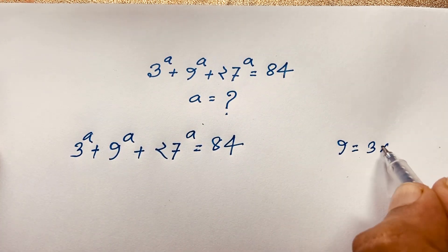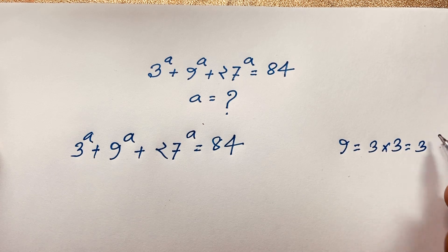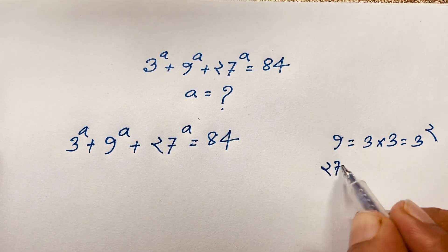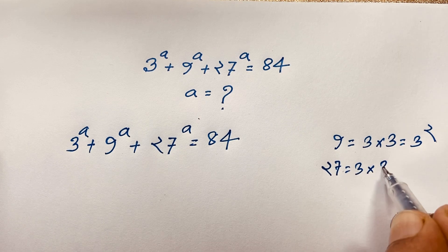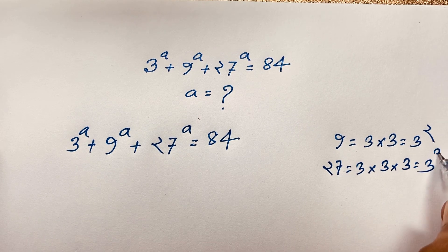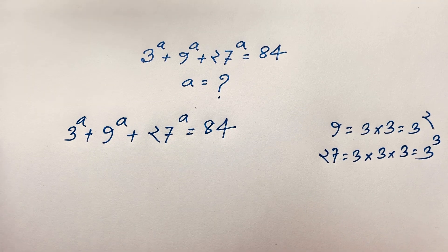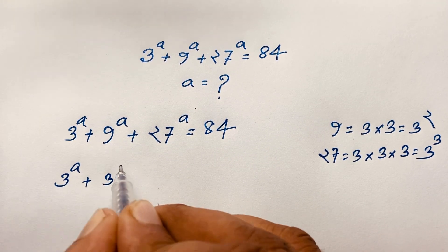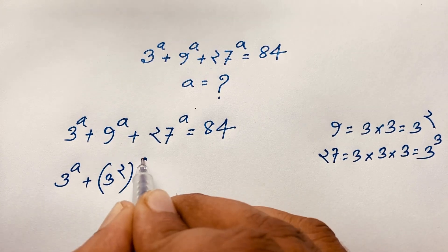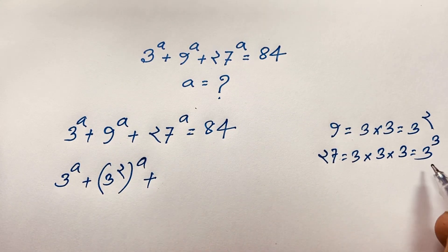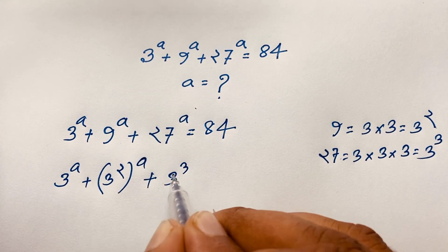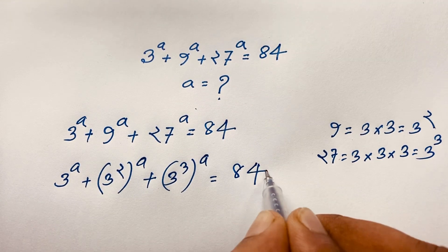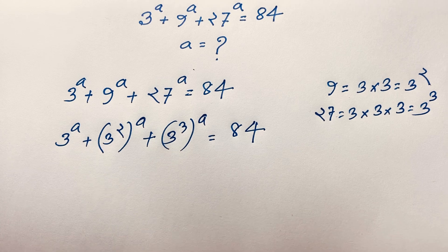You can see that 9 equals 3 times 3, meaning 3 squared, and 27 equals 3 times 3 times 3, which is 3 to the power 3. So the expression becomes: 3^a plus (3^2)^a plus (3^3)^a equals 84.